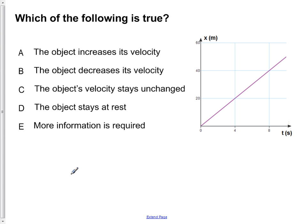Which of the following is true? A, the object increases its velocity. B, the object decreases its velocity. C, the object's velocity stays unchanged. D, the object stays at rest. Or E, more information is required.